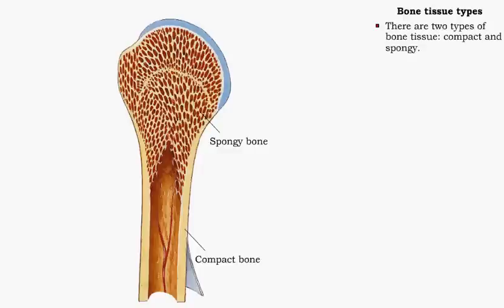There are two types of bone tissue: compact and spongy. All of the bones of the skeleton have both kinds of tissue.